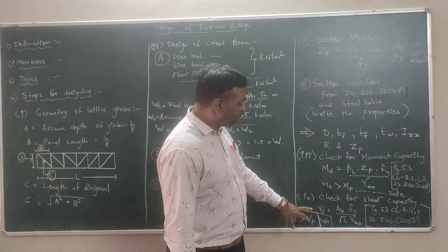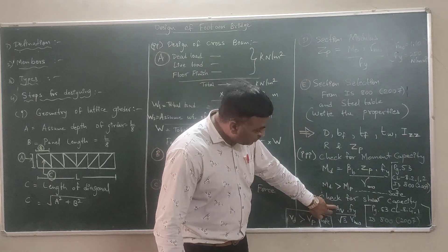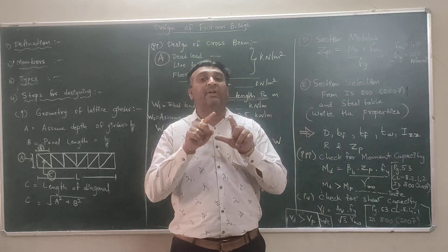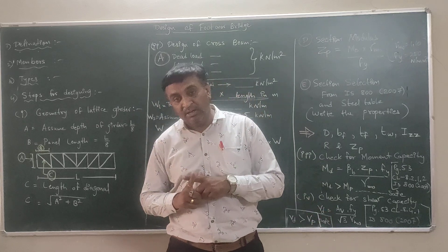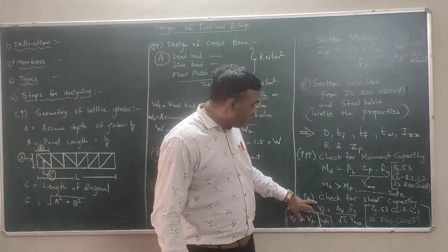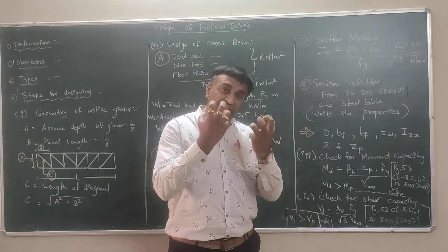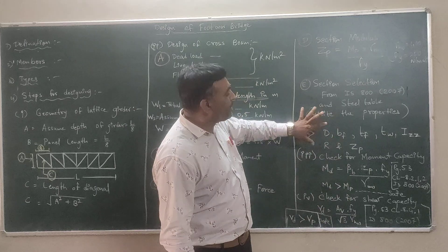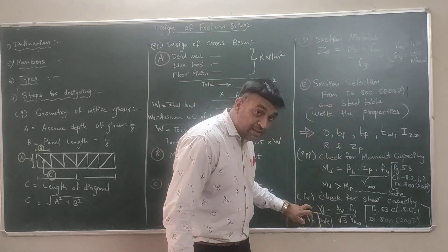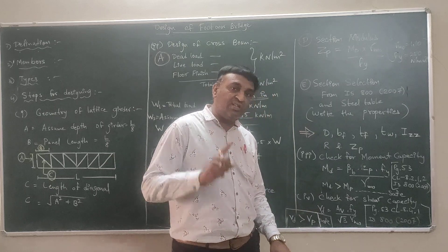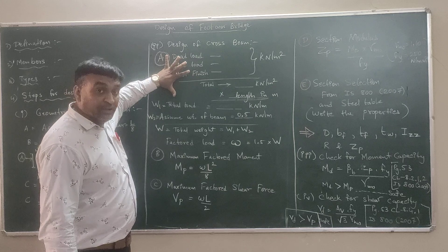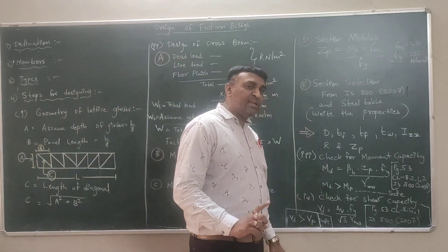The second check is for shear force. The shear capacity is VD = AV × Fy / (√3 × γMO), where AV is the area of the web of the I-section. Remember: moment is always resisted by the flanges, and shear force is always resisted by the web. If VD ≥ VP, the section is okay for shear. This completes the section selection part.